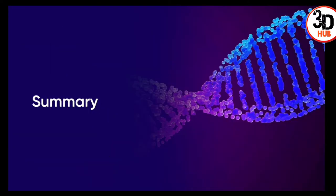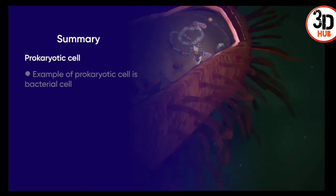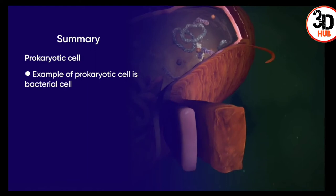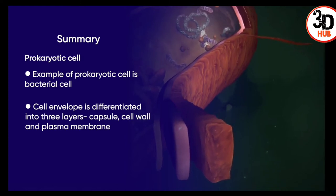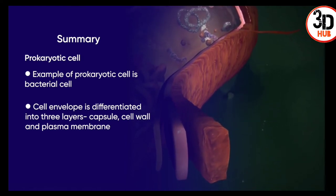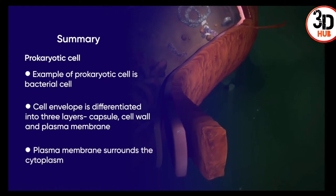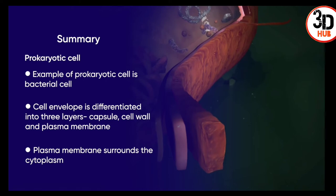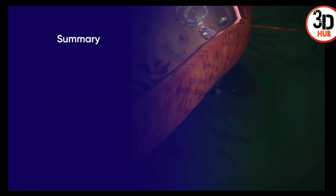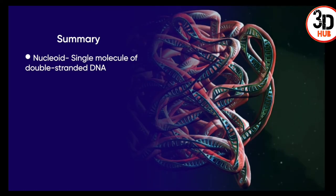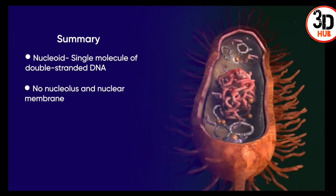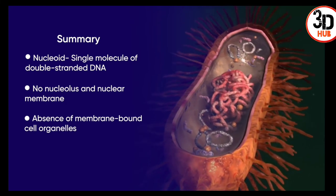To summarize the prokaryotic cell: the cell envelope is differentiated into three layers — capsule, cell wall, and plasma membrane. The plasma membrane covers the cytoplasm, at the center of which is a nucleoid formed of a single molecule of double-stranded DNA, with no nucleolus or nuclear membrane present.